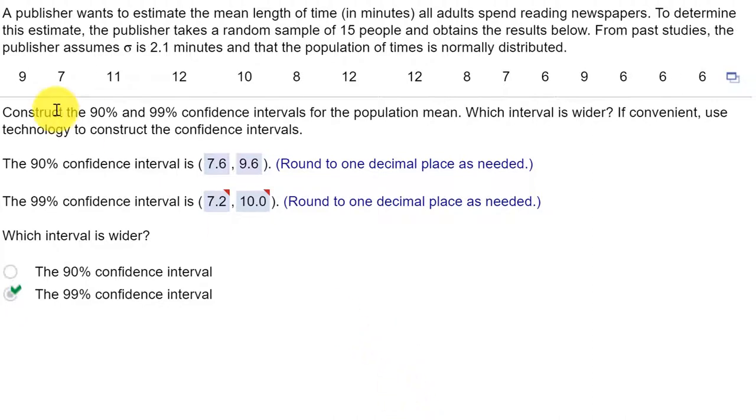If we read the problem, it says a publisher wants to estimate the mean time—that's the population mean—because it says of all adults reading newspapers. He takes a sample of 15 people, which is a small sample, and from past studies,